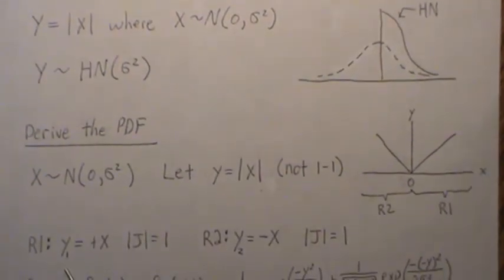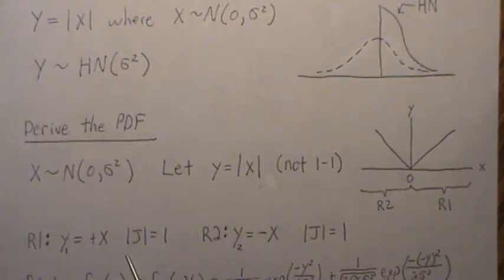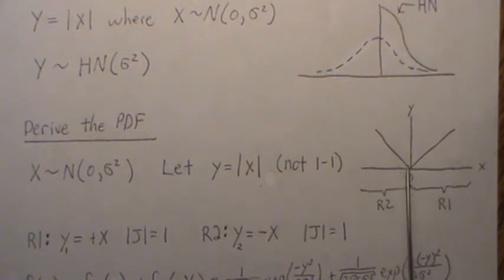So in region one, I'm going to call it y1 equals x. The Jacobian is just one. In region two, y is equal to minus x, right, because the x's are negative. So if we take the negative of it, it creates a positive number. And the Jacobian is one. The absolute value of the Jacobian is one.